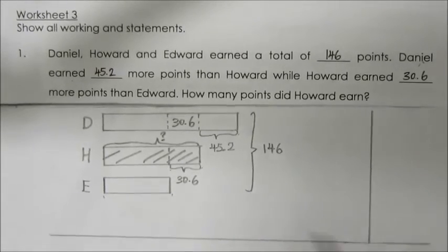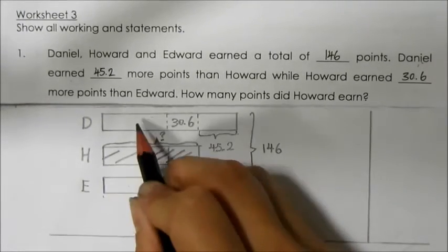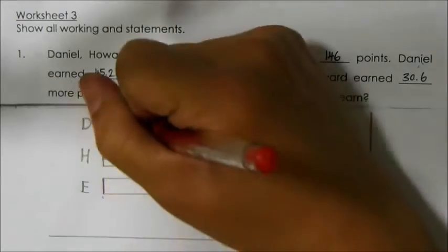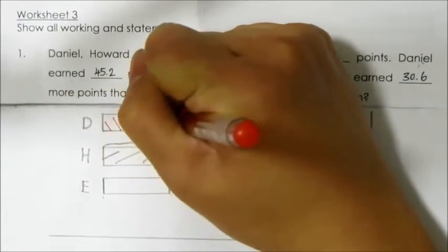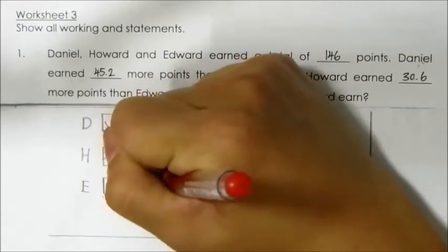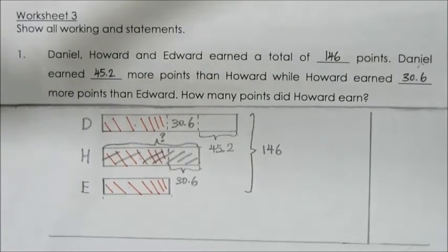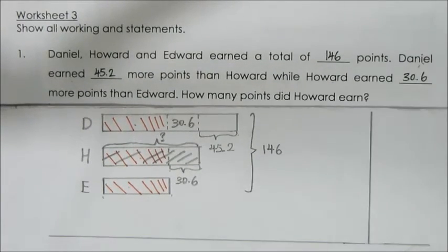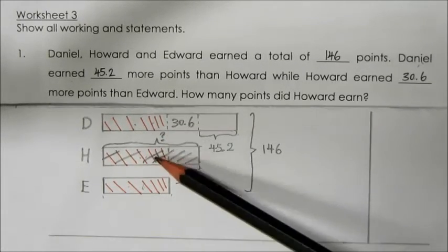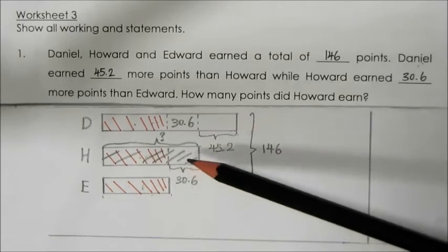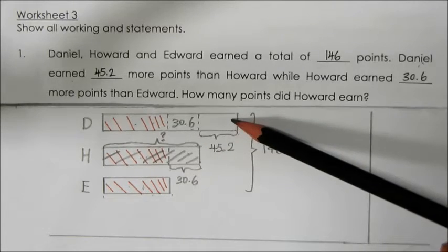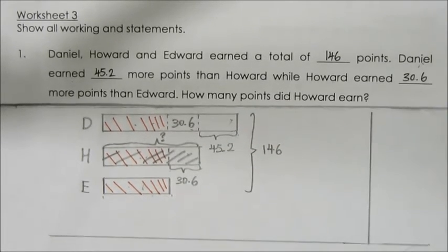I'm going to tell you these three parts over here, which I will be shading in red, are of the same size. So these three units — represented by the red ink — plus 30.6 plus 30.6 plus 45.2 gives me a total of 146 points.